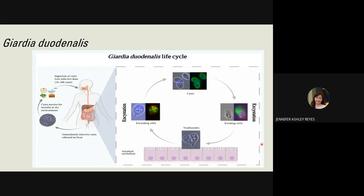Giardia duodenalis is a major cause of parasite-induced diarrheal disease. It is found worldwide, but prevalence is higher in low-income or developing countries. Its route of infection is fecal-oral, with contaminated water or food as sources, or through direct contact with infected people or animals. Cysts survive in feces, and if feces contaminate food or water, they become immediately infectious.